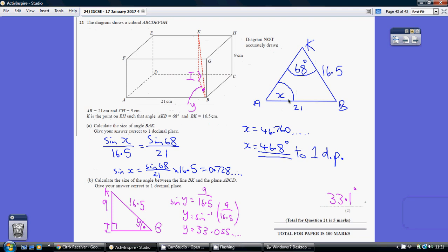Now clearly this isn't a right angle triangle. So we're going to have to use either the sine rule or the cosine rule. We do have a pair. We know that angle and its opposite side so we can use the sine rule. So sine X over 16.5 equals sine 68 over 21. Multiply both sides by 16.5, we get this. So pop this into your calculator and we get 0.728 dot dot dot. Inversing that and you get 46.760 dot dot dot, which is 46.8 degrees to one decimal place.